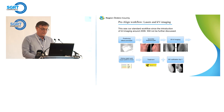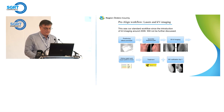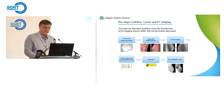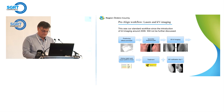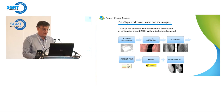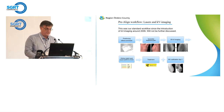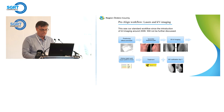This is our pre-AlignRT workflow — quite standard procedures at the time. We set patients up according to lasers, we do 2D KV imaging, we do an online match of the KV imaging, we do treatment and MV verification at the first treatment day. One thing to point out is that when we did the online match, the routine was that we only did the couch shift from the match if we had a shift larger than a certain limit, and the limit we worked with was 4mm.